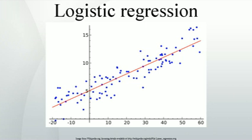Wald statistic. Alternatively, when assessing the contribution of individual predictors in a given model, one may examine the significance of the Wald statistic. The Wald statistic, analogous to the t-test in linear regression, is used to assess the significance of coefficients. The Wald statistic is the ratio of the square of the regression coefficient to the square of the standard error of the coefficient, and is asymptotically distributed as a chi-square distribution. Although several statistical packages, for example SPSS, report the Wald statistic to assess the contribution of individual predictors, the Wald statistic has limitations. When the regression coefficient is large, the standard error of the regression coefficient also tends to be large, increasing the probability of type II error. The Wald statistic also tends to be biased when data are sparse.